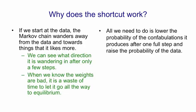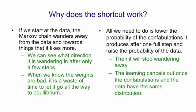All we need to do is lower the probability of the reconstructions, or confabulations as a psychologist would call them, it produces after one full step, and then raise the probability of the data. That will stop it wandering away from the data. Once the data and the places it goes to after one full step have the same distribution, then the learning will stop.